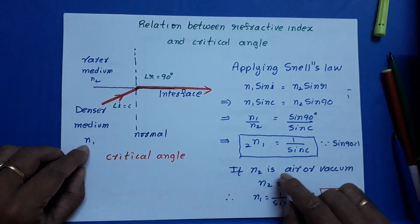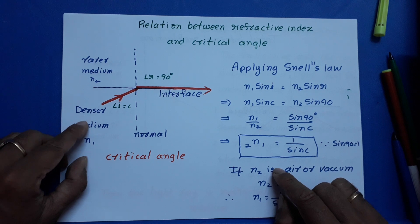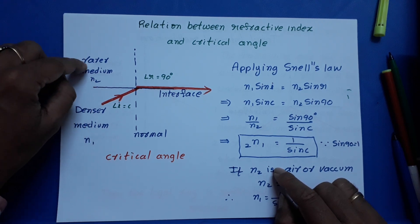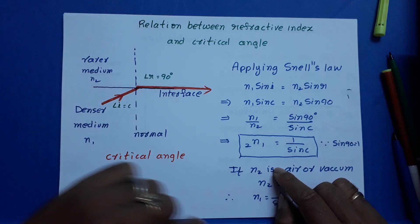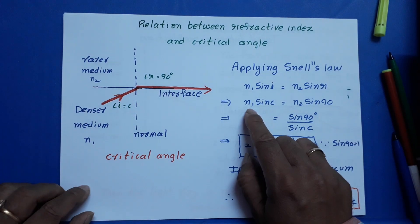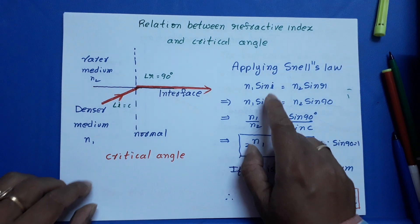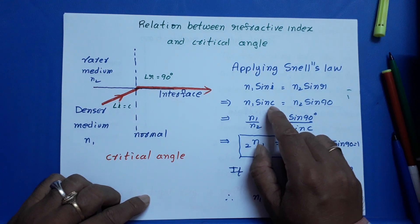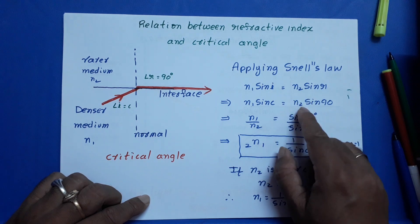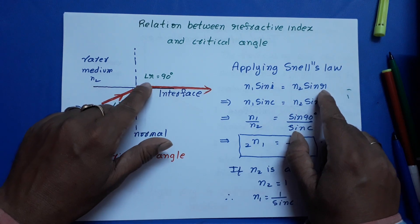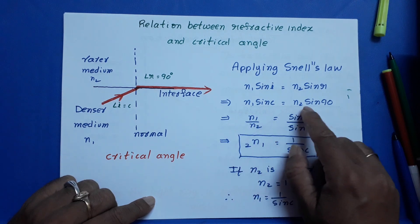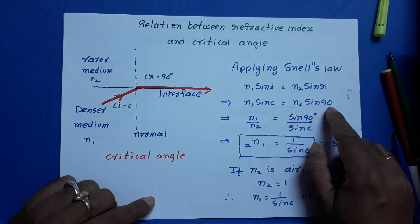Now N1 is the refractive index of the denser medium. N2 is the refractive index of the rarer medium. Now here I am applying N1 sin — what is i? Here, angle i is equal to angle c, so I substituted c. Is equal to N2 — what is r? Angle r is equal to 90 degrees. So, N1 sin c is equal to N2 sin 90. Simple substitution.